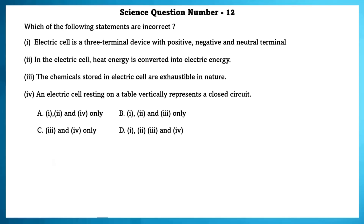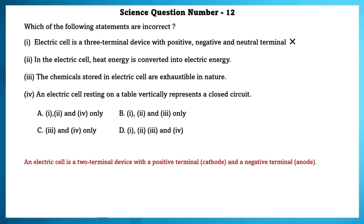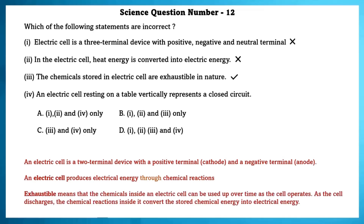Science question number 12. Which of the following statements are incorrect? First: an electric cell is a three-terminal device with positive, negative and neutral terminal — wrong, an electric cell is a two-terminal device with a positive terminal (cathode) and a negative terminal (anode). Second: in an electric cell, heat energy is converted into electric energy — wrong, an electric cell produces electric energy through chemical reactions. Third: the chemicals stored in an electric cell are exhaustible in nature — this is true, as the chemical energy is converted into electrical energy over time. Fourth: an electric cell resting on a table vertically represents a closed circuit — wrong, it does not represent a closed circuit.